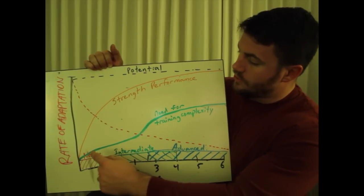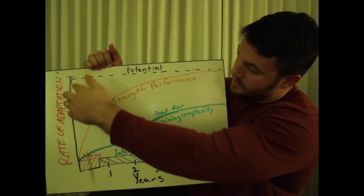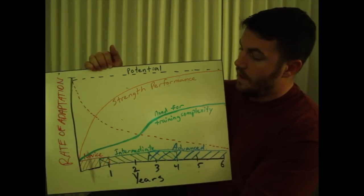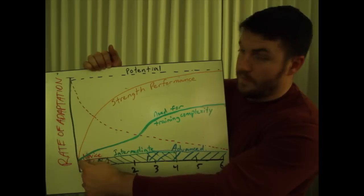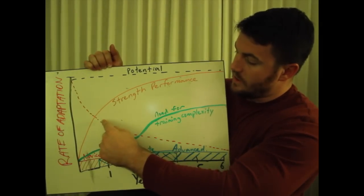Likewise, as you train, your strength performance goes up. But you will notice that these curves are inversely related to each other. As strength performance, your absolute strength ability increases, your adaptation decreases.